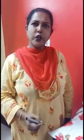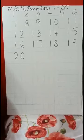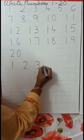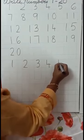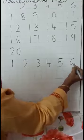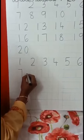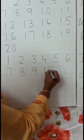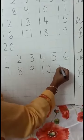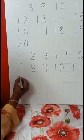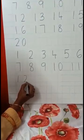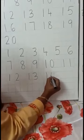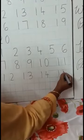Now children, same way again you will write numbers 1 to 20. 1, leave 1 box. 2, leave 1 box. 3, leave 1 box. 4, leave 1 box. 5, leave 1 box. 6, leave 1 box again. 7, leave 1 box. 8, leave 1 box. 9, leave 1 box. 1 in 1 box, 0 in another box: 10, leave 1 box. 1 and 1: 11. Same way come down. Leave boxes: 1, 2 — 12. Leave 1 box: 1, 3 — 13. Leave 1 box: 1, 4 — 14. Leave 1 box: 1, 5 — 15.